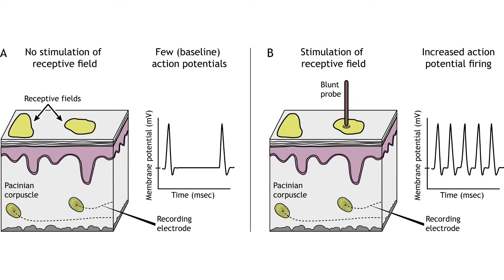Each mechanoreceptor responds to a touch stimulus in a specific area of the skin, a region called the receptive field of the receptor. When no stimulation of the receptive field occurs on the surface of the skin, the mechanoreceptor will show a baseline firing rate. When stimulation of the receptive field occurs, the firing rate of the mechanoreceptor will increase.